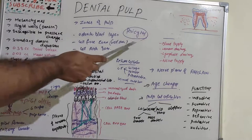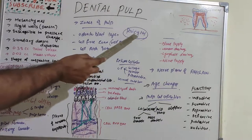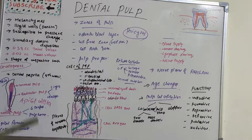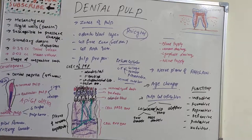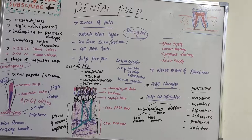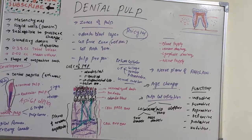Pericytes are an important topic for short notes. They are capillary-associated fibroblasts and are suggested as progenitor cells for replacement of odontoblasts. Pericytes surround the endothelial lining and are basically involved in the production of odontoblasts.